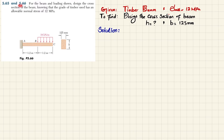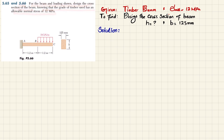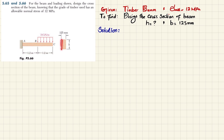Welcome back. Problem 5.66 — for the beam and loading shown, design the cross section of the beam knowing that the grade of timber used has an allowable normal stress of 12 megapascal. This is a cantilever beam AC with a distributed load of 18 kilonewton per meter over a length of 1.2 meters. The total beam length is 2.4 meters. The cross section has a breadth of 125 millimeters and an unknown height h that we need to find.